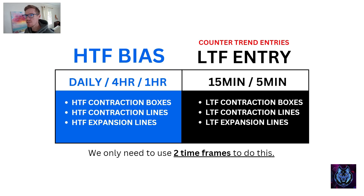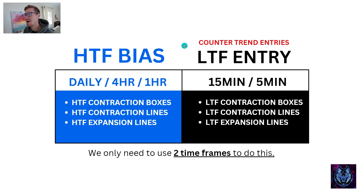The higher time frame is used to discover our bias — what direction is the market going to move in? Once confirmed, it's easy to know whether we're sticking to just longs or just shorts. The higher time frame bias can be used on the daily, four hour, or one hour. With that in place, we go to our lower time frame — 15 minutes or five minutes — and we do the same: mark out contraction boxes, contraction lines, and expansion lines. We need to make sure that the entries are counter-trend entries in the direction determined by the higher time frame bias.